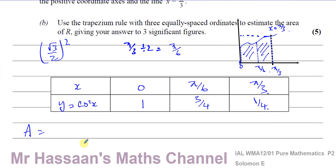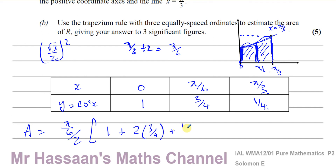To use the trapezium rule, we divide the region into trapeziums and estimate the area. We need the distance between the parallel sides, which is pi over 6, divided by two, times the sum of the parallel sides. The middle ordinate is used twice; the first and last are used once each. So it's pi over 12 times (1 + 2 times three quarters + a quarter).